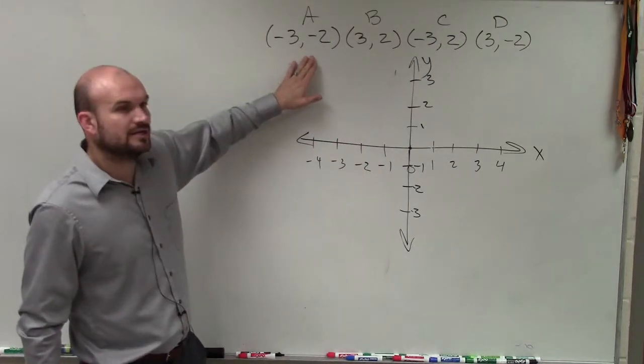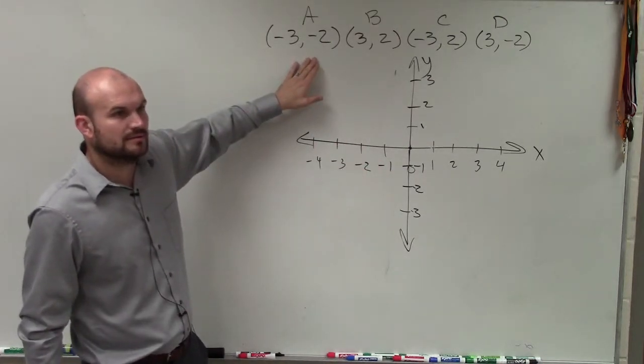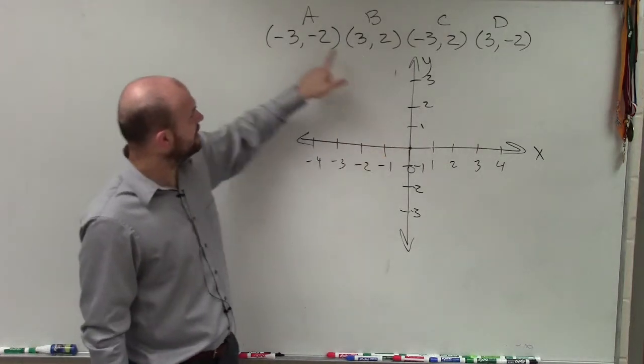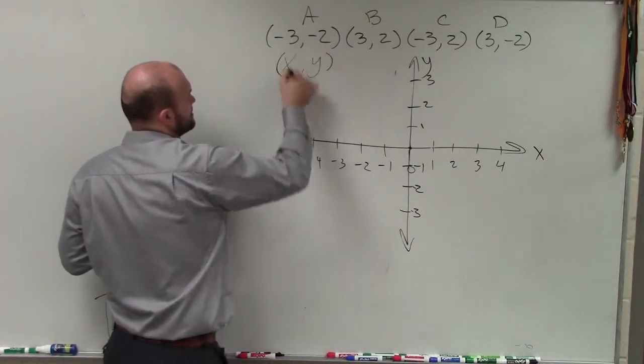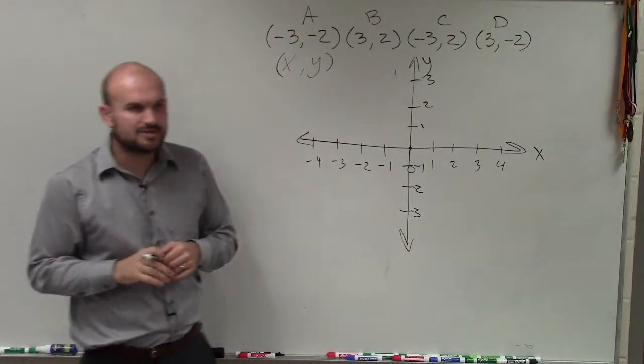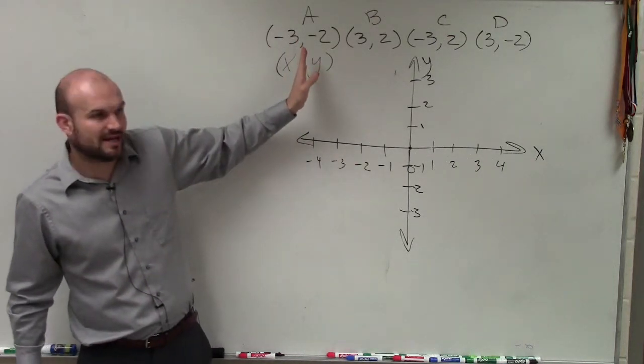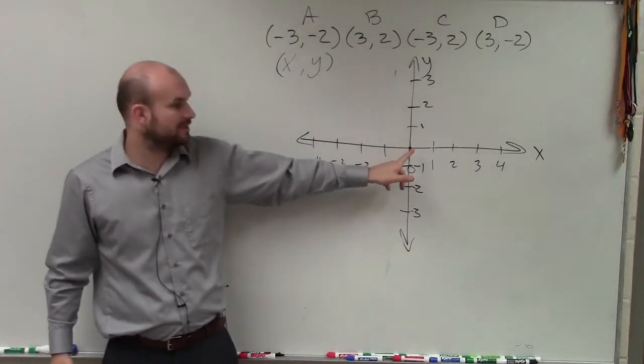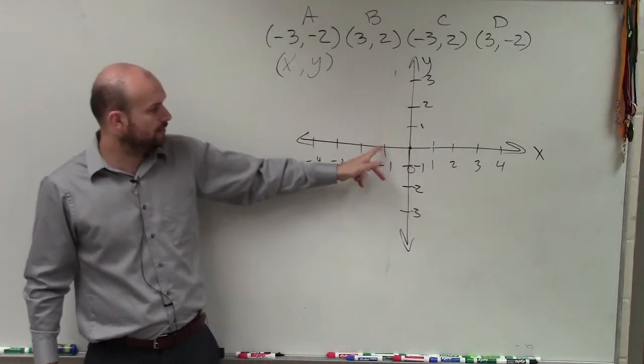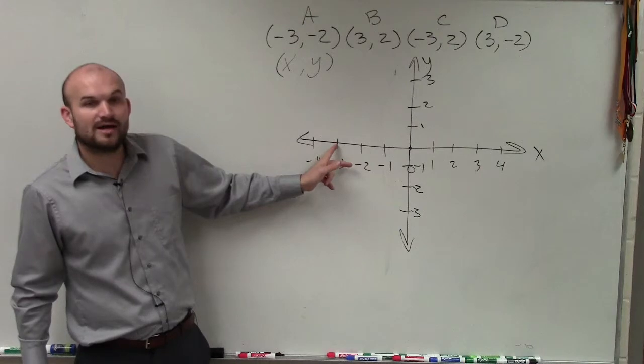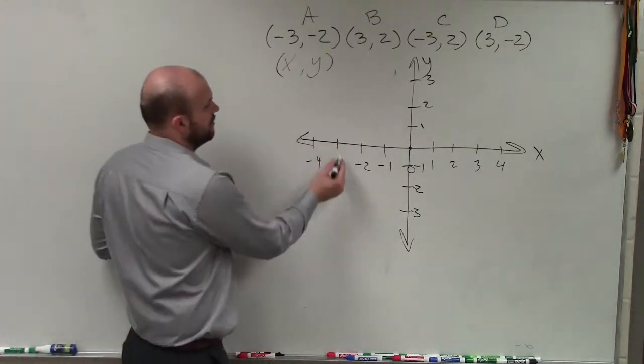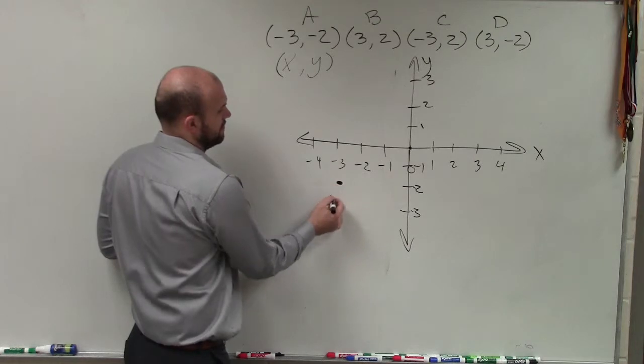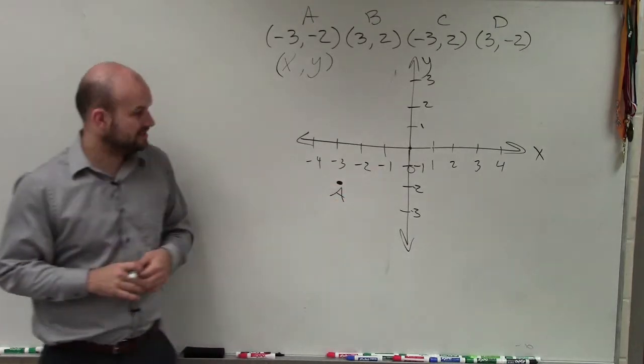So let's go ahead and get started with number A, letter A. So letter A, remember this has x and y coordinates. So first of all, we have x-coordinate is negative 3. So therefore, on the x-axis, I'm going to go over to negative 3, 1, 2, 3. And the y-coordinate is negative 2. So I'm going to go down to negative 2, 1, 2. That is my coordinate point A. Anybody have any questions on that?